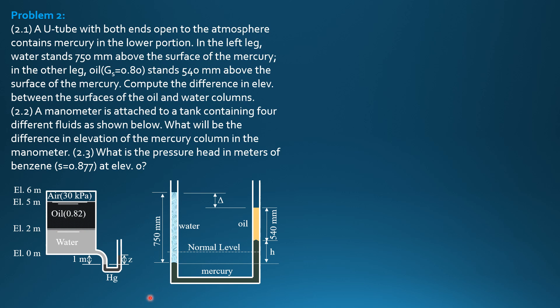Then when oil is present, whatever is depressed in the left leg, that's also the rising of mercury surface in the right leg.